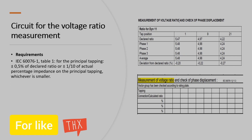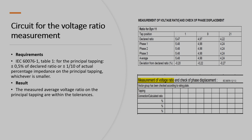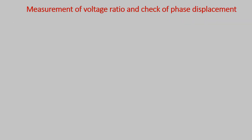This requirement is under IEC 676: the principal tapping tolerance is plus and minus 0.5 percent of the declared ratio. This is the principal tapping value, which is very small. The result shows that the measured average voltage ratio and the principal tapping are within that tolerance.